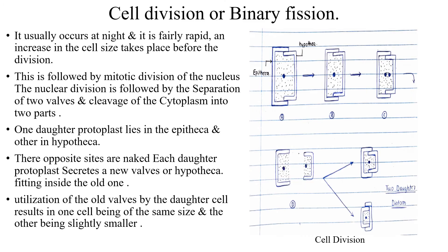For cell division or binary fission, please observe the cells already drawn in the diagram. You can see epitheca and hypotheca — it is a diagrammatic, hand-drawn representation. Cell division occurs during night, it is fairly rapid, and an increase in cell size takes place before the division.